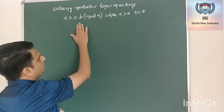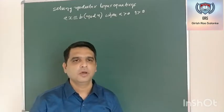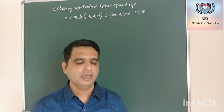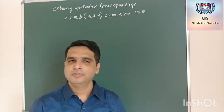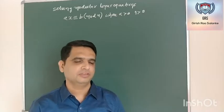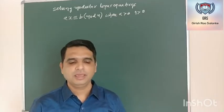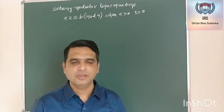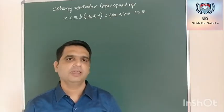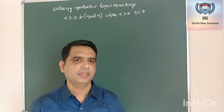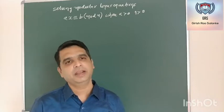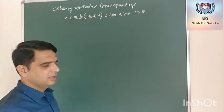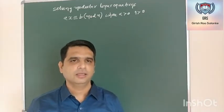Solving this type of modular linear equation has so many applications. One such application is the generation of the decryption key in case of the RSA algorithm. RSA is a popular public key crypto system wherein we use two keys — one key in order to encrypt the data and one more key to decrypt. Generally, we use the public key for encryption and the private key for decryption. The generation of the private key, which is basically used in order to decrypt the data, uses a modular linear equation in order to generate the decryption key.